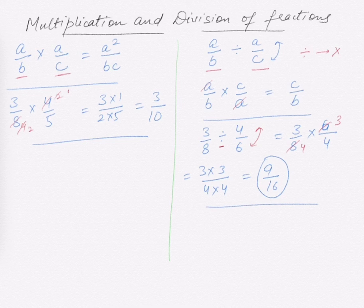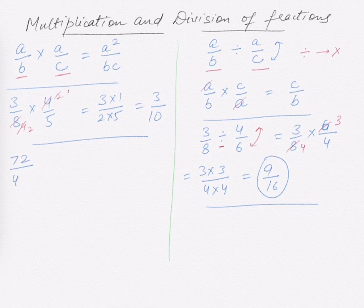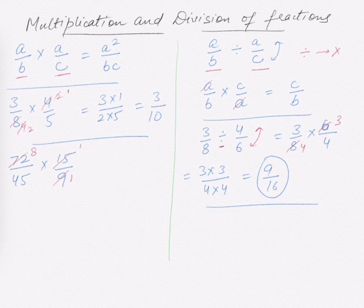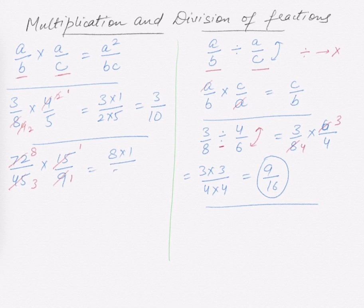Let's do one more multiplication with a bigger term: 72/45 times 15/9. We can easily cancel: 9 eights are 72, so 72 becomes 8; and 15 threes are 45, so 45 becomes 3. At the top we have 8 times 1, and at the bottom 3 times 1.